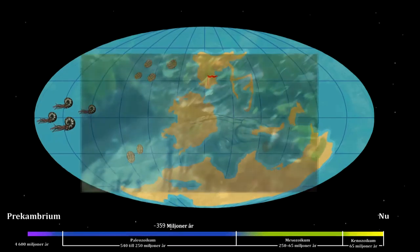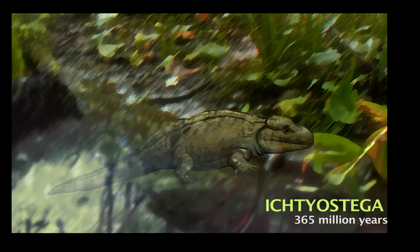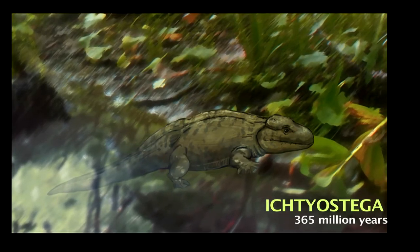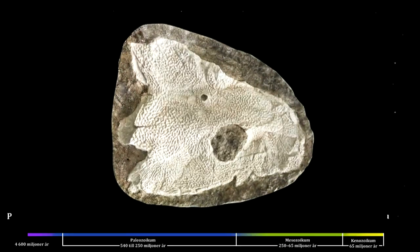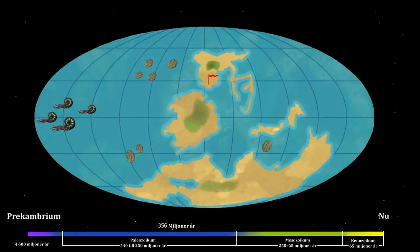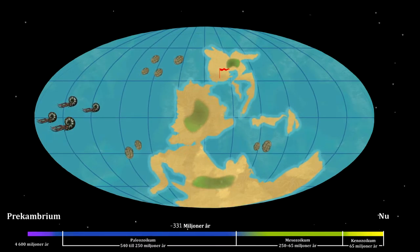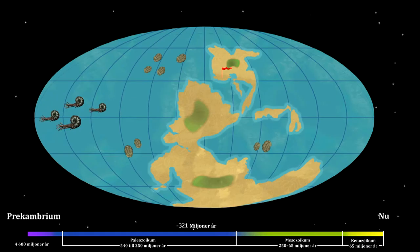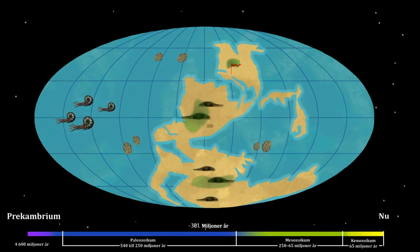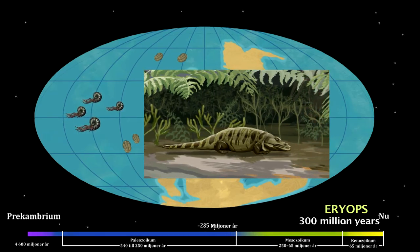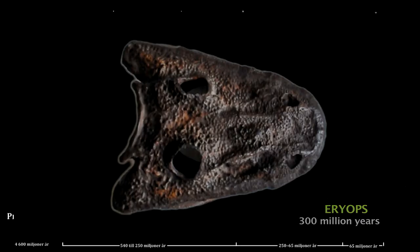Here's a crawling fish that lived in swamps 365 million years ago — a transitional or intermediate form between fish and land-living beasts. Here is Acanthostega, an amphibian, big as a crocodile, crawling through the marshes 300 million years ago.